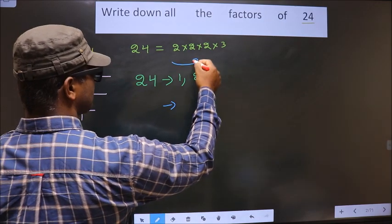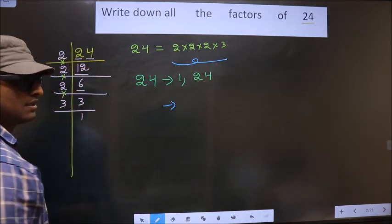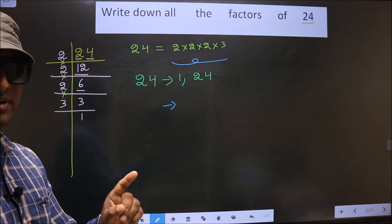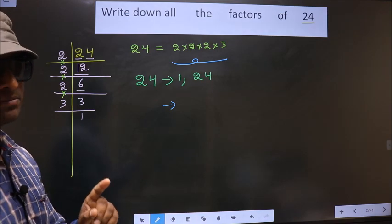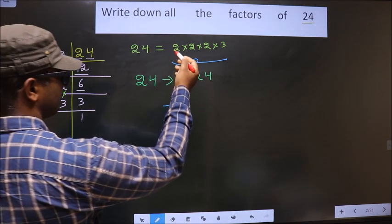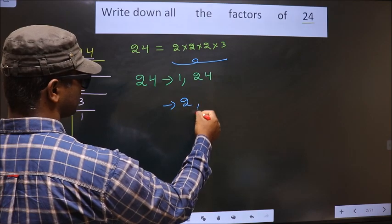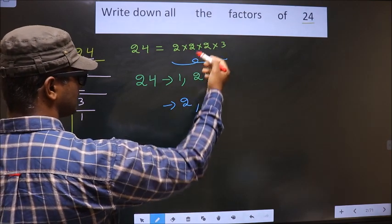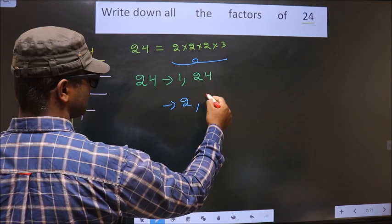Now from these numbers, you select one different number at a time. So let's say first I select 2. If I select again 2, it's already there. If I select 2, it's there. So the next number is 3.